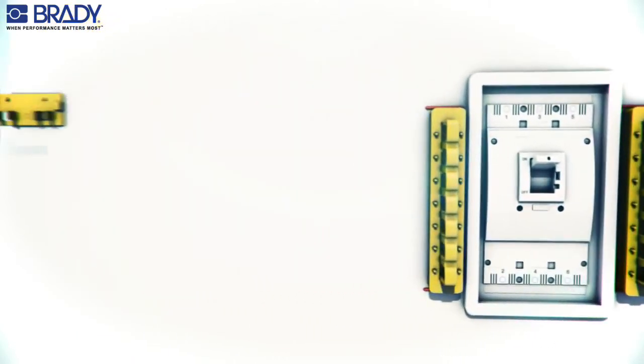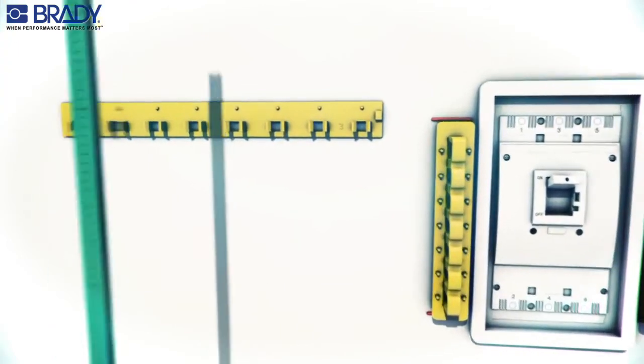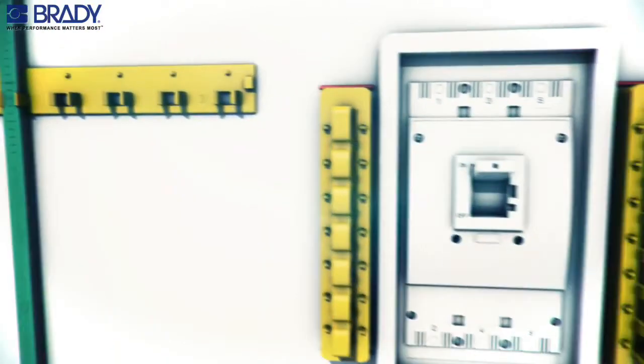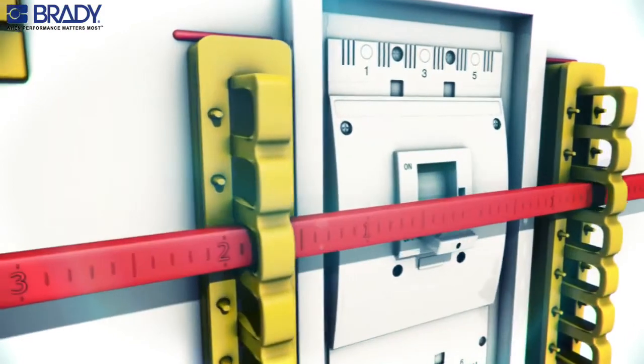Place the blocking bar holder on the switch panel to store the unused blocking bars. To block the switch in the off position, place the red blocking bar.